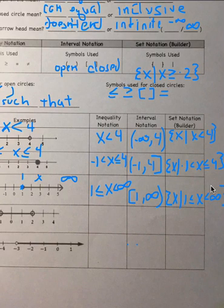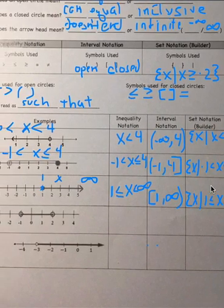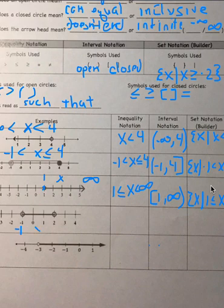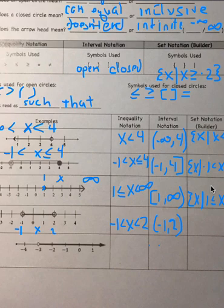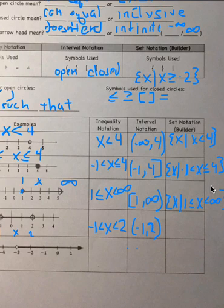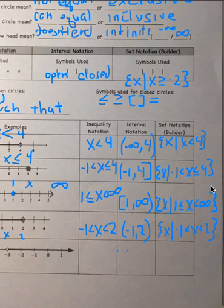Next example: you can see it's at negative one, x in the middle, and two. Both are open points. Inequality notation: negative one is less than x is less than two. Interval notation: they're both in parentheses — negative one, comma, two in parentheses. Set builder notation: squiggly bracket, the set of all x's such that negative one is less than x is less than two, then close the bracket.